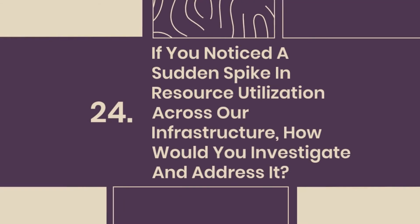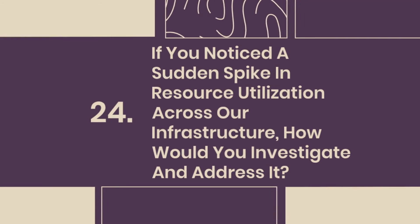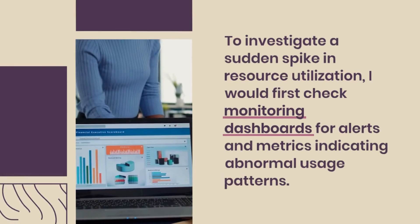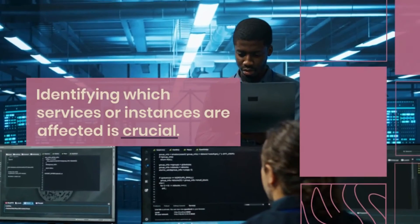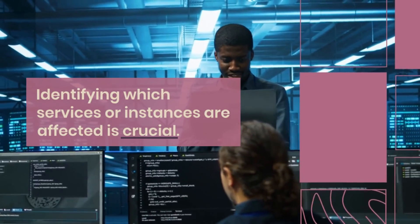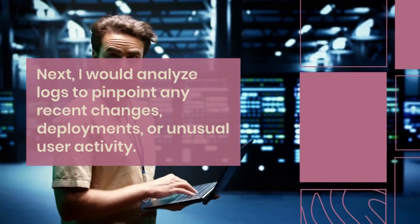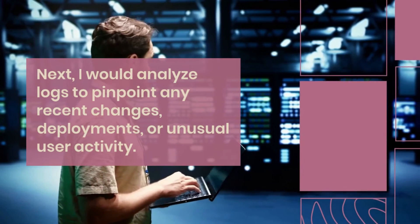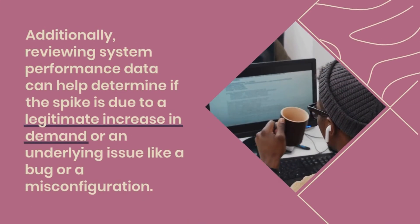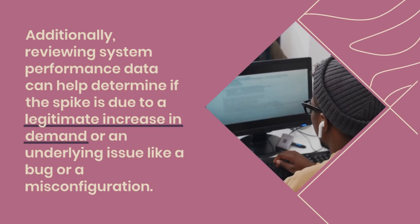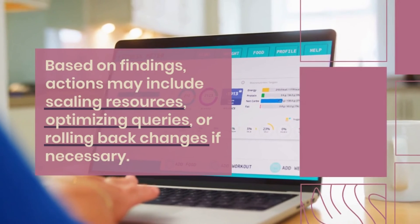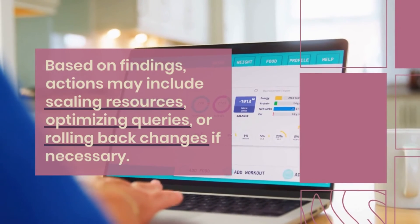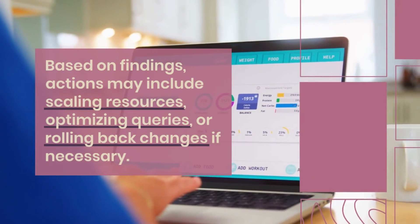Developing and testing incident response plans will ensure readiness for any security breaches. Question 24: If you noticed a sudden spike in resource utilization across our infrastructure, how would you investigate and address it? I would first check monitoring dashboards for alerts and metrics indicating abnormal usage patterns. Identifying which services or instances are affected is crucial. Next, I would analyze logs to pinpoint any recent changes, deployments, or unusual user activity. Reviewing system performance data can help determine if the spike is due to a legitimate increase in demand or an underlying issue like a bug or a misconfiguration. Based on findings, actions may include scaling resources, optimizing queries, or rolling back changes if necessary.